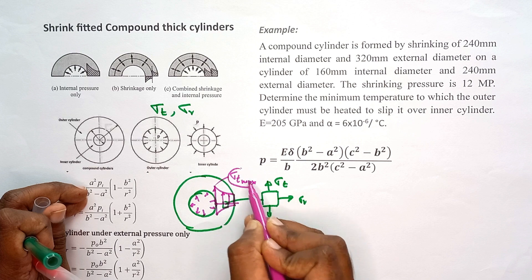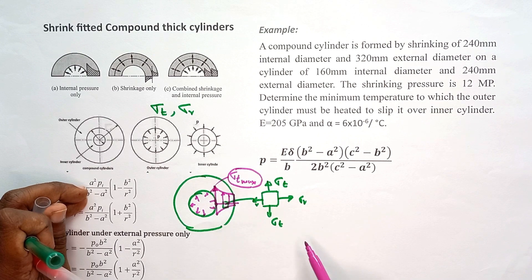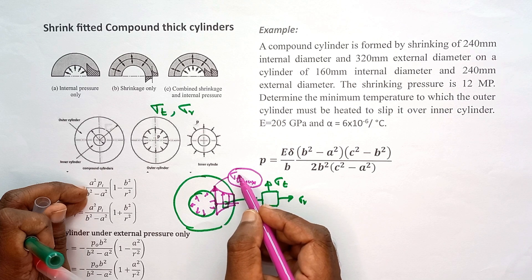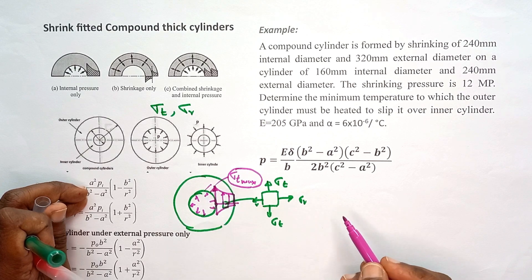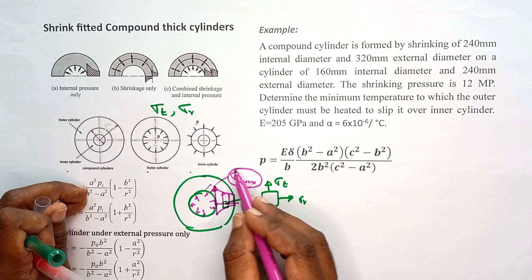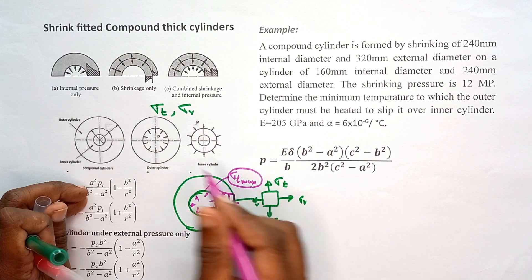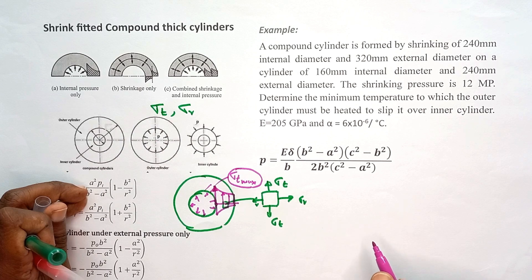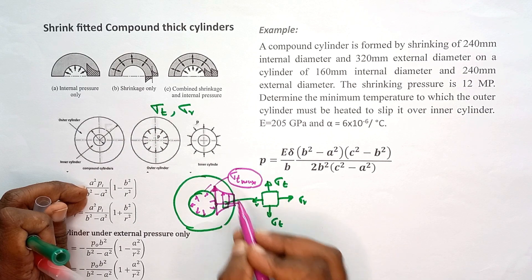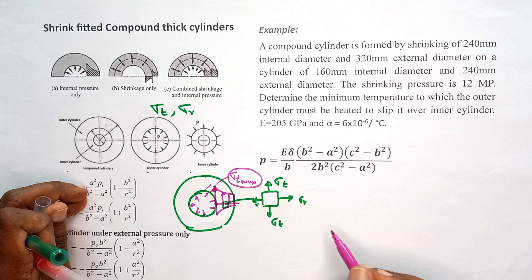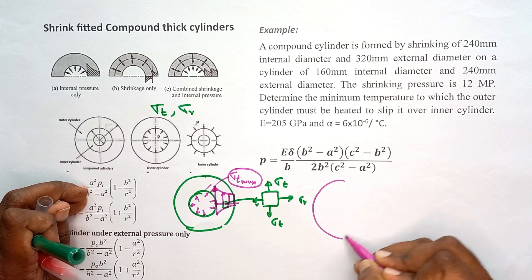The maximum tangential stress is the critical stress — it is the principal stress acting at the inner surface. If it exceeds the material yield stress, failure may occur. So it is very important to limit the maximum tangential stress. One of the methods to achieve this is shrink fitting. Shrink fitting can reduce the maximum tangential stress.